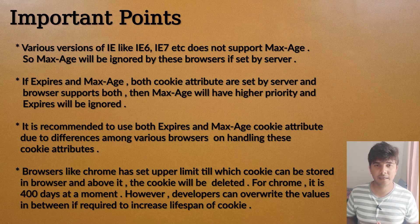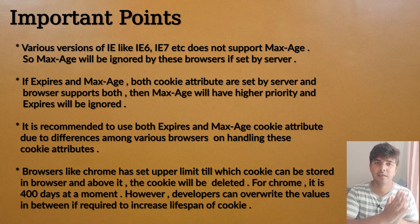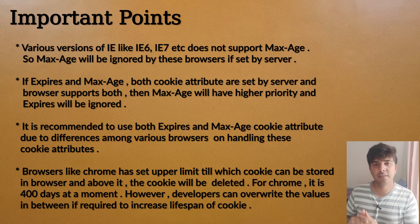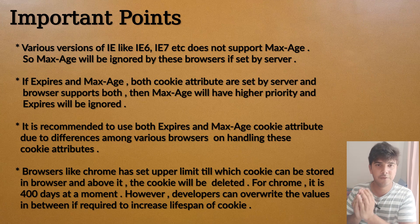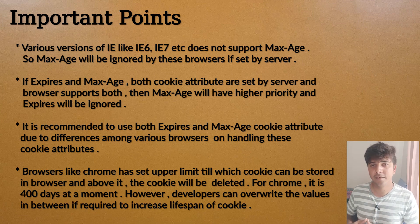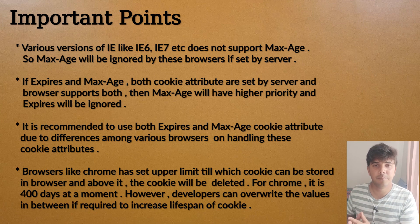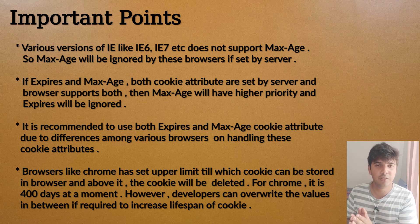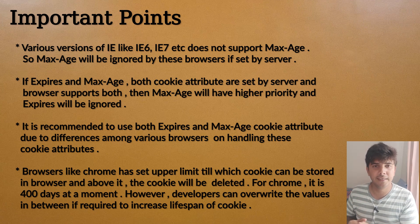The final point is that various browsers like Google Chrome have set an upper limit on how far in the future a cookie can be stored. For example, in Google Chrome a cookie can only be stored for up to 400 days, after which it will be automatically deleted. So they have set an upper cap on how long a cookie can be stored in the browser.